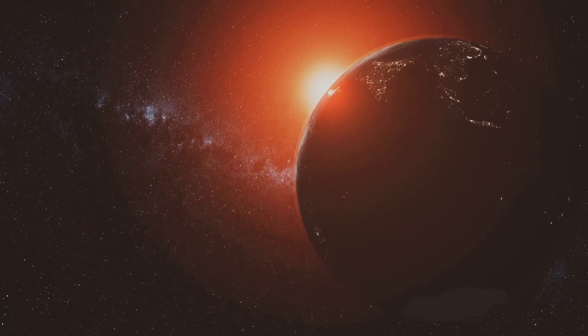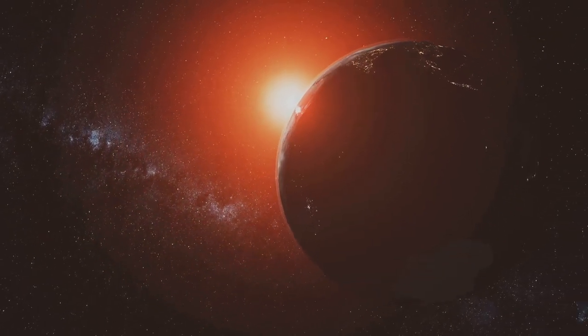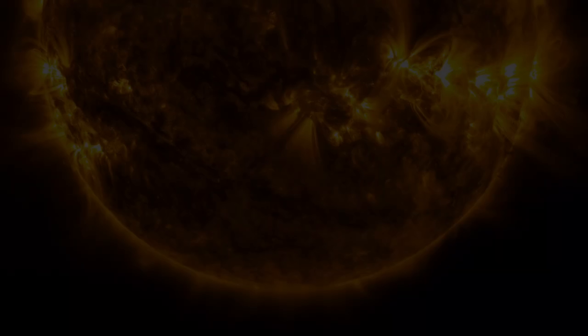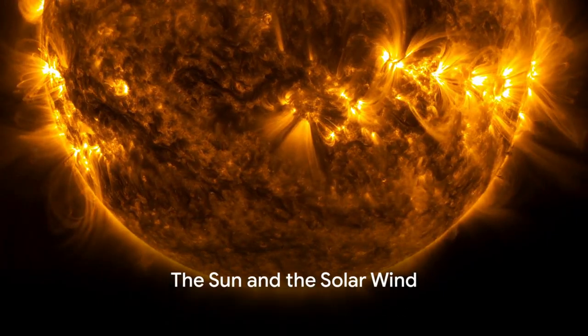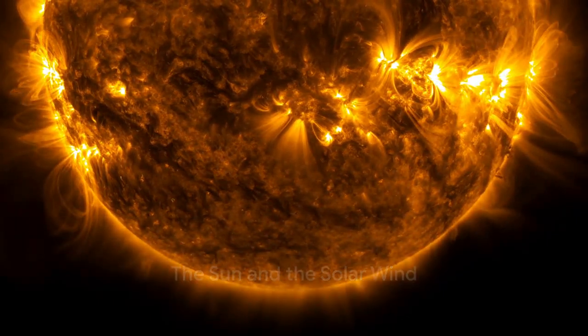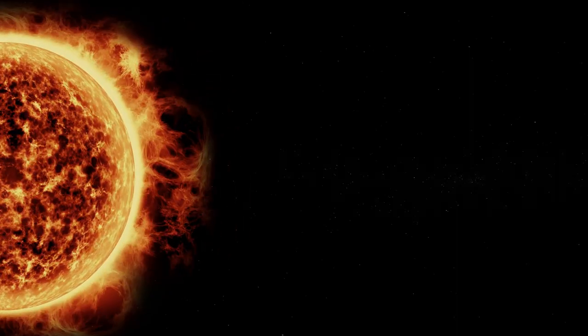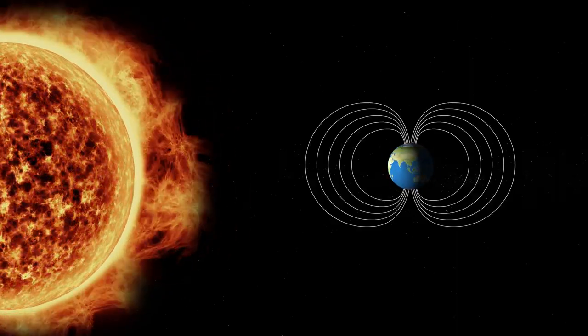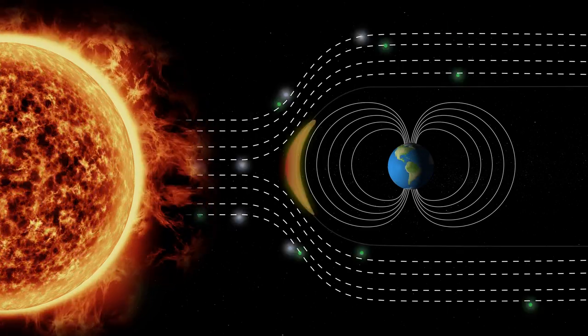This system, our home, is a complex and diverse place, full of a variety of celestial bodies. At the center of our solar system is the Sun, a sphere of hot, glowing gases. Now, let's take a closer look at the Sun, and the intriguing phenomenon known as the Solar Wind.